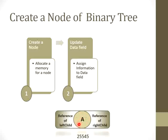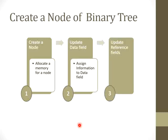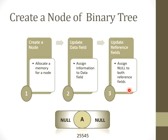Step three is to update the reference fields by assigning null to both reference fields. Why do we assign null? To indicate that currently a single node exists in the binary tree. Also, if both the left child reference and right child reference are null, it indicates that this is a leaf node — this node does not have any left or right child.